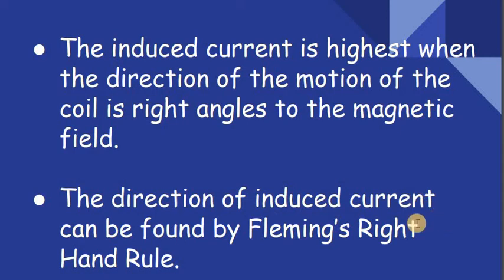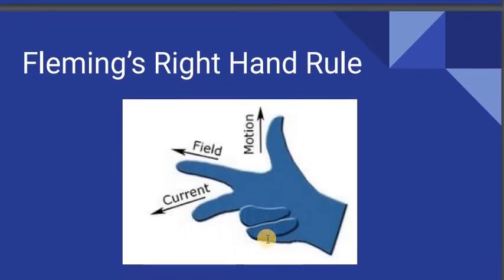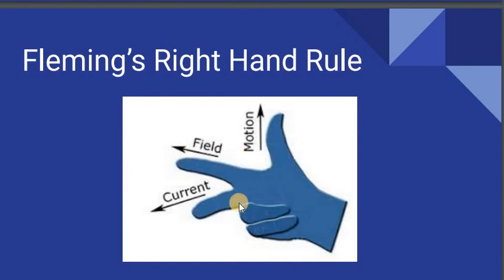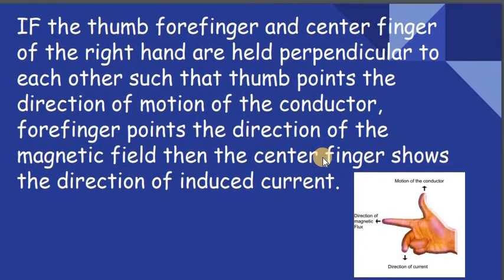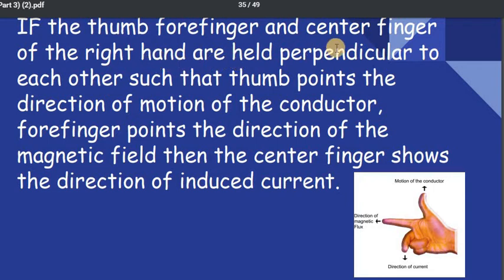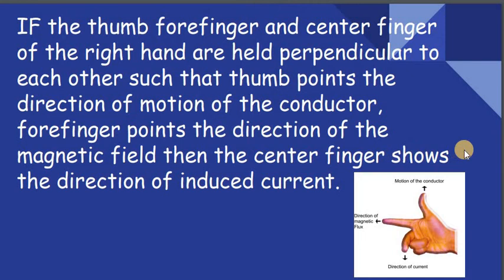The direction of the induced current can be found by Fleming's right hand rule. Stretch the forefinger, center finger, and thumb of the right hand so that they are mutually perpendicular to each other. If the thumb points the direction of motion of the conductor and the forefinger points the direction of the magnetic field, then the center finger shows the direction of the induced current.